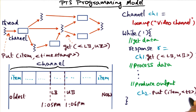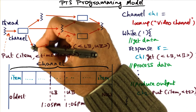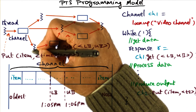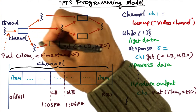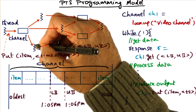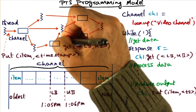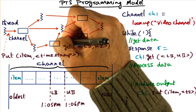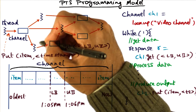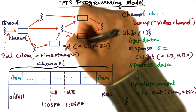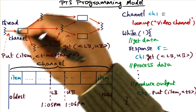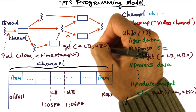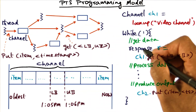This is a place where the programming model facilitates temporal causality to be propagated in the distributed system. If this thread is a detector thread looking at camera images produced by a camera thread, it can take the camera images, process them, and place the result in its output channel. When it places the result in the output channel, it can use the same timestamp that it received on the input image in doing the put operation. That way, temporal causality is propagated through the graph by the computation using the primitives available from the PTS programming system.